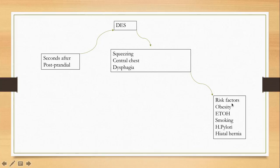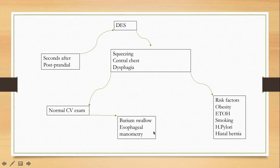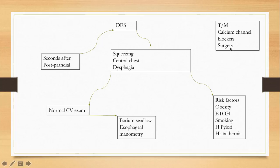Risk factors for diffuse esophageal spasm are similar to GERD risk factors. The cardiovascular exam will be normal. The diagnostic test of choice is barium swallow, which will show a corkscrew esophagus. Esophageal manometry can also be used to measure esophageal pressure to confirm the diagnosis. Treatment of choice is calcium channel blockers, with surgery as a last resort.